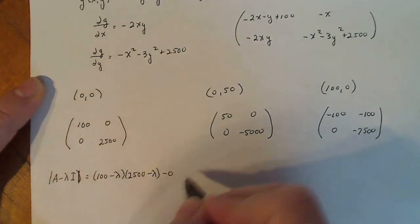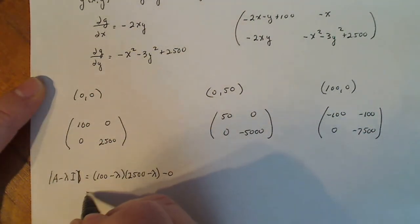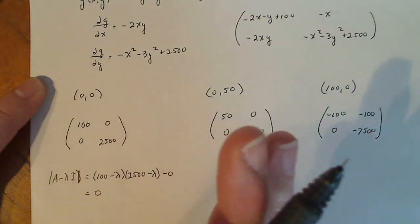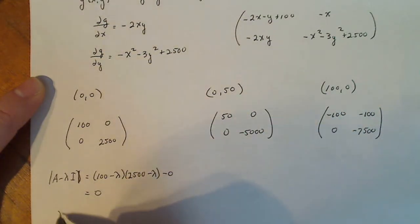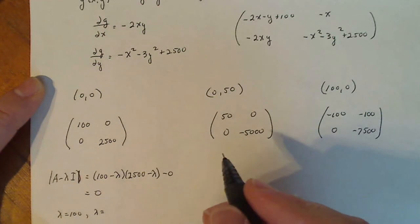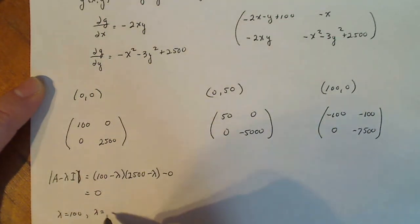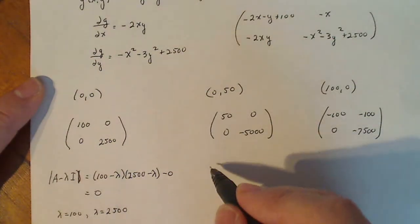In order to make sure my lambda creates a singular matrix, so that means lambda is equal to 100 and lambda is equal to 2,500. So at the equilibrium point, this is a source.